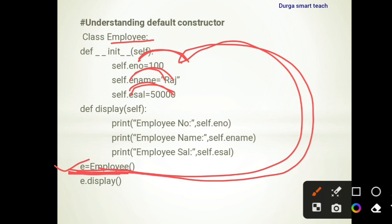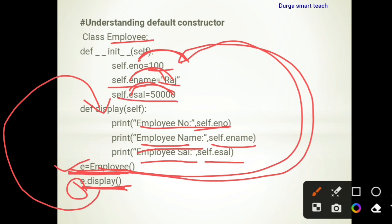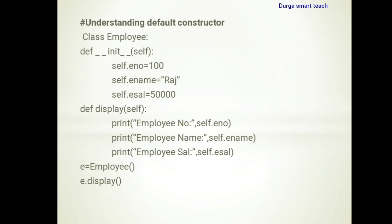The variables are initialized with values. After that we call the display function using the object: e.display(). The display function shows employee number as self.e_number which contains 100, employee name as self.e_name which contains 'Raj', and employee salary as self.e_salary which contains 50000. This is the default constructor example.